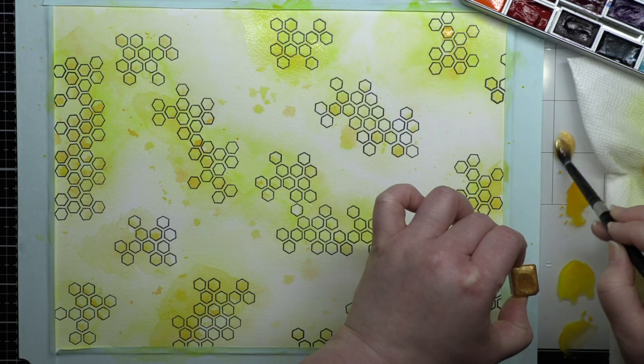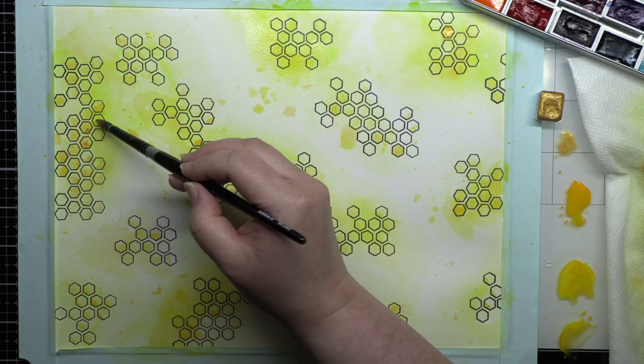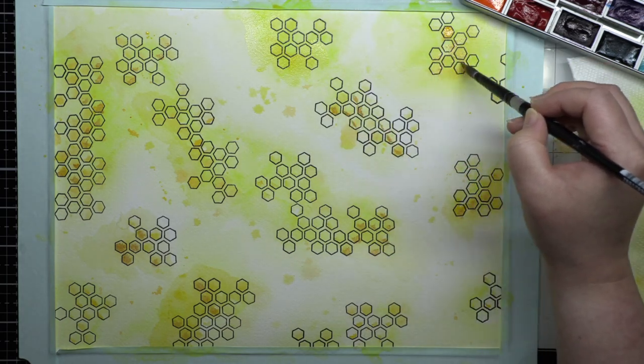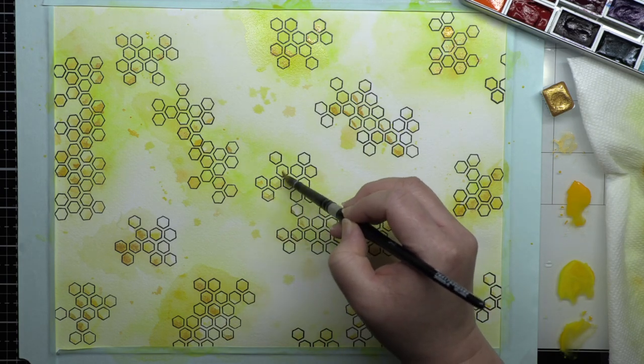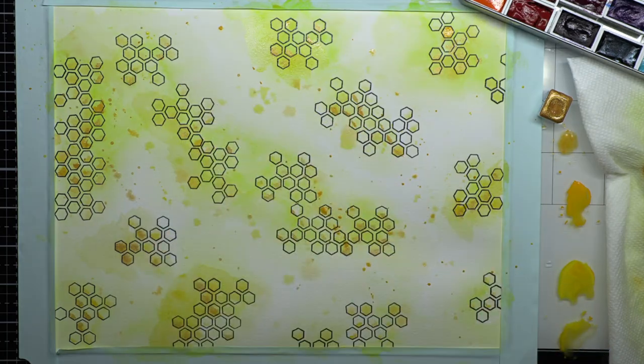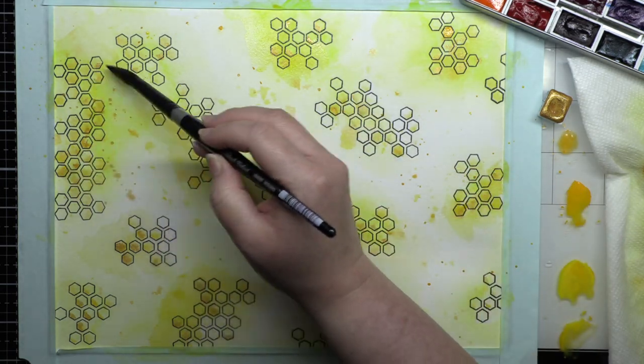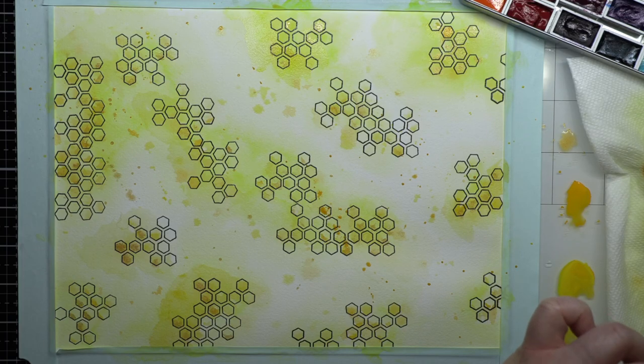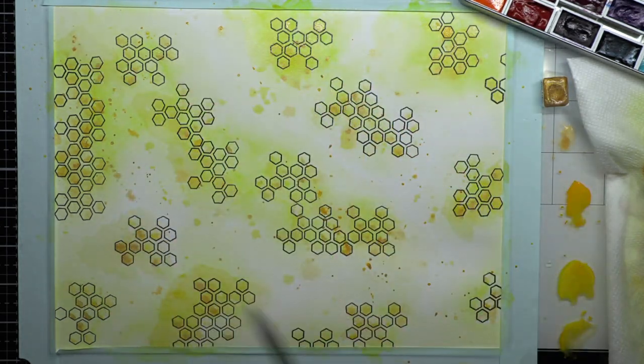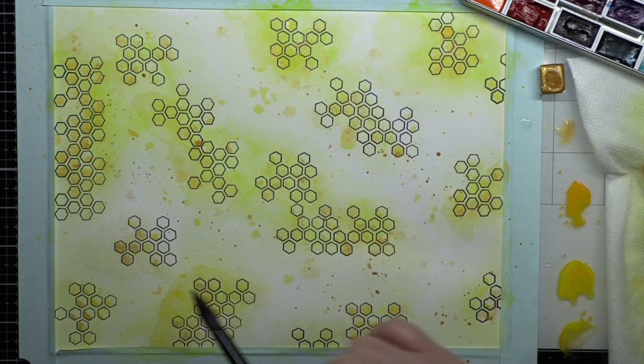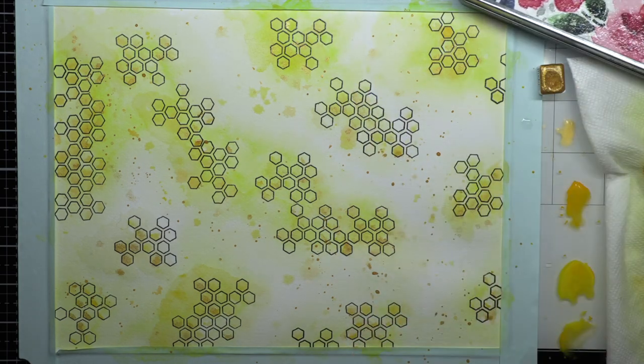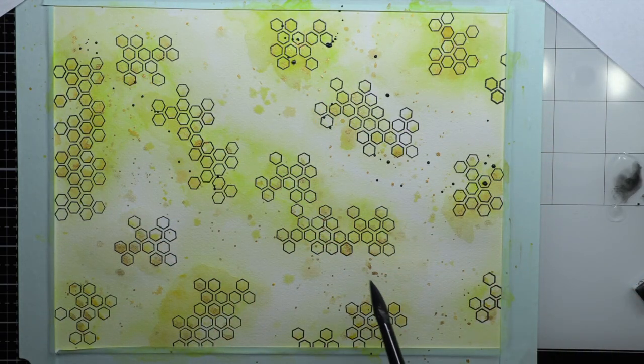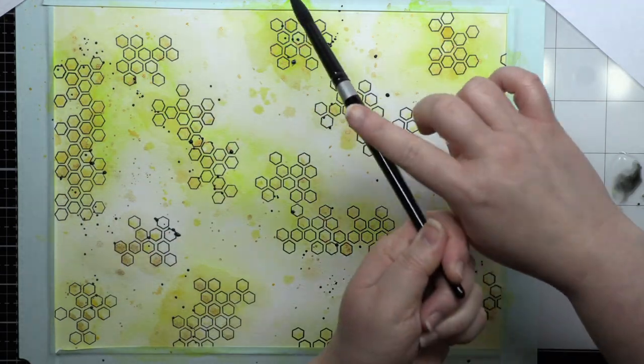Next, I add a little metallic gold watercolor to some of the honeycombs and splatter gold across the panel. I dry the panel and then finish it with splatters of pearlescent black watercolor paint. The gold and black are hydrocolor handmade watercolors and the yellows are from my Mijello Mission Gold palette. You can find links to them below.